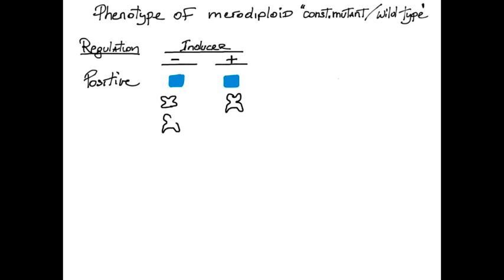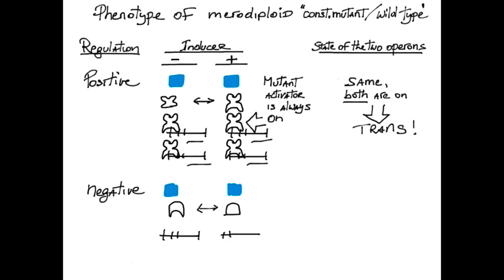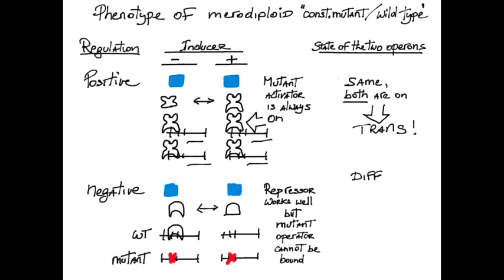Let's compare these two regulatory modes in a merodiploid analysis. Positive regulation would give us equal expression on both haplotypes, the hallmark of trans. Negative regulation would give us specific expression of the mutant haplotype, the hallmark of cis.